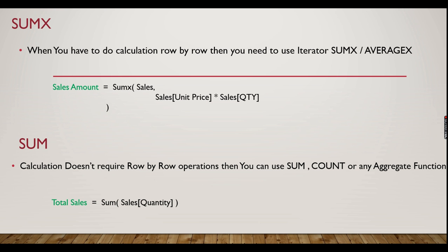When you have to do calculations row by row, you need to use the iterator SUMX — or if you need to find an average, AVERAGEX. A typical example is a sales table where SUMX calculates unit price multiplied by quantity, row by row, so your business logic is correct. In that case you need to use SUMX.